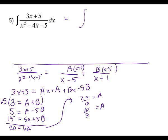We need to get the b value now. So I'm going to plug into this equation for b. Three equals ten thirds plus b. I'd probably turn this three into nine thirds. So b is going to be negative one third. So when I go to set this up, I know I've got to have x minus five and x plus one.